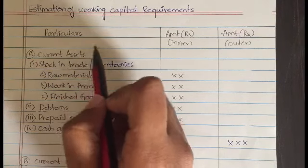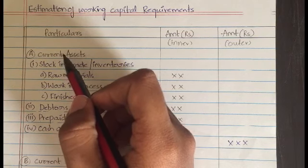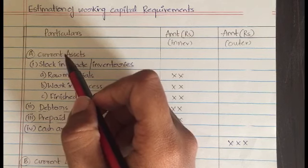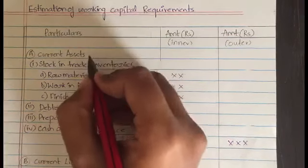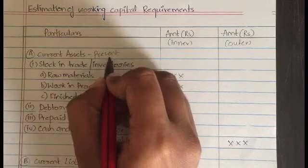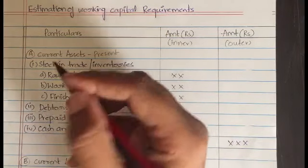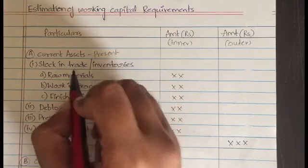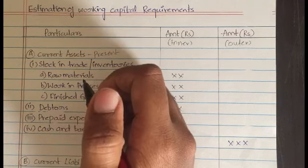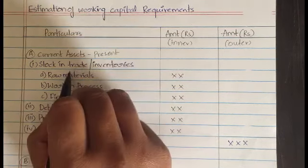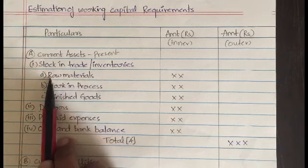The first one is current assets. Current assets are nothing but what a company is having now at present — what the company is owning, its capital or whatever it is at present, what a company is holding. In current assets we have some divisions, some subcategories. The first one is stock in trade, also called as inventories. Inventories are nothing but your raw materials and transport — all these things will come under stock in trade or inventories.